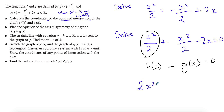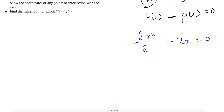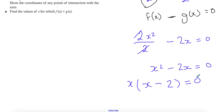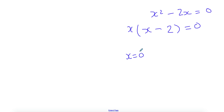Combining x²/2 plus x²/2 gives 2x²/2, which simplifies to x². The 2x terms cancel out, leaving x² minus 2x equals zero. You can find the solution using the GDC calculator, or continue by hand. Factoring gives x(x - 2) = 0, so x equals 0 and x equals 2. We found the x-coordinates, but we also need the y-coordinates, which you get by substituting each x value into one of the functions.